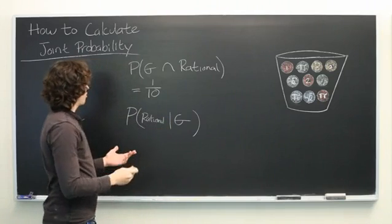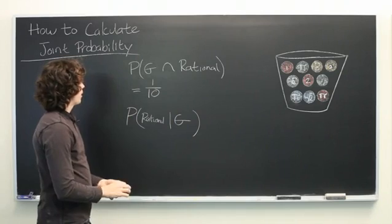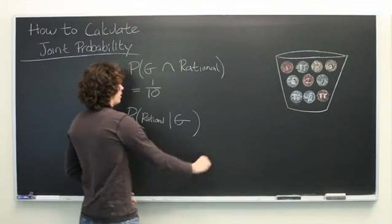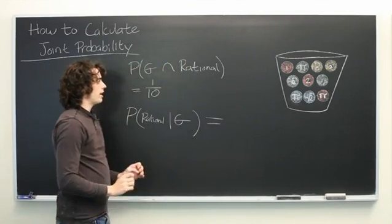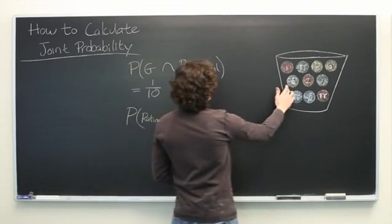In other words, what is the probability of rational given green? Okay, so in this case, the denominator of our fraction is no longer going to be 10. It's going to be the number of green events, which in this case is 3.